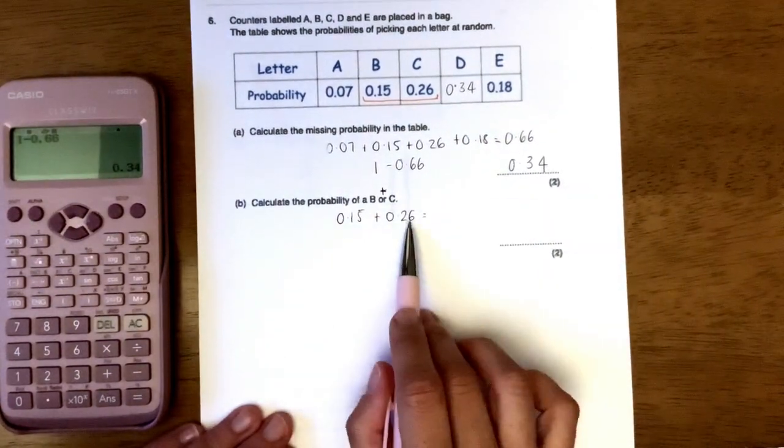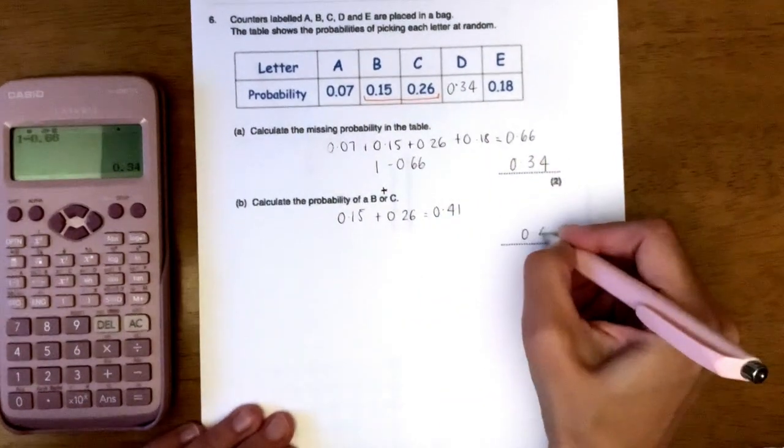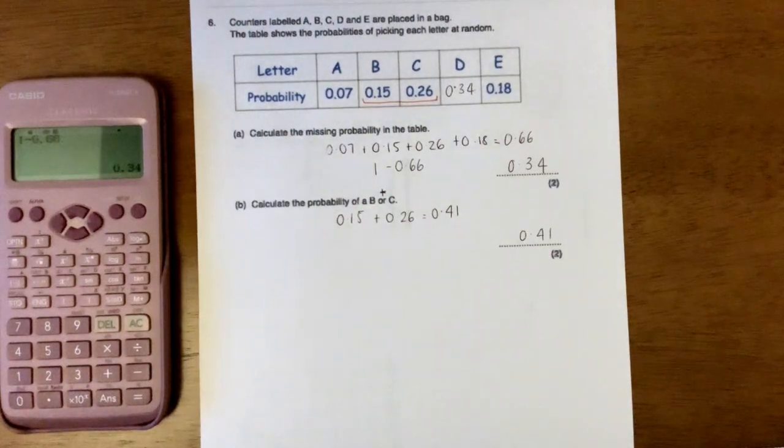So 0.15 plus 0.26 is 0.41. So 0.41 would be our answer. What I want you to do now is I want you to have a go at the questions.